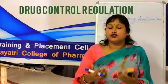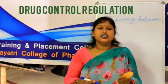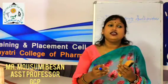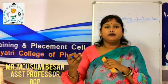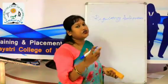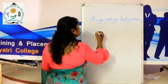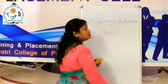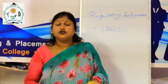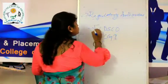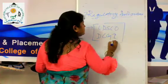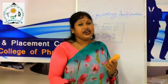Regulatory authorities act as the connection between the drug development department and the marketing department of a company. In India, we have two drug regulatory authorities. The first one is CDSCO, that is Central Drug Standard Control Organization. Another one is DCGI, Drug Control General of India. These two are the regulatory authorities which act inside India.